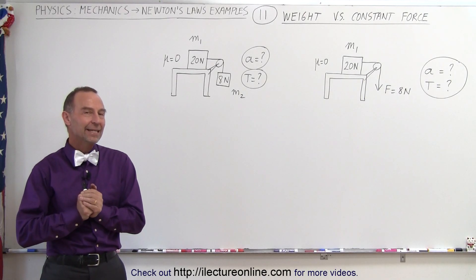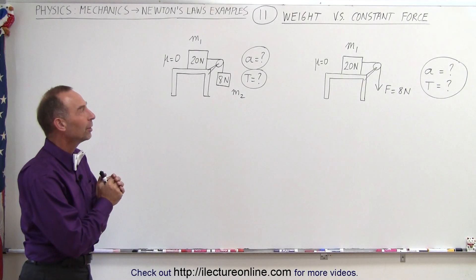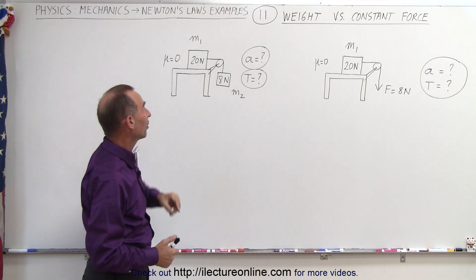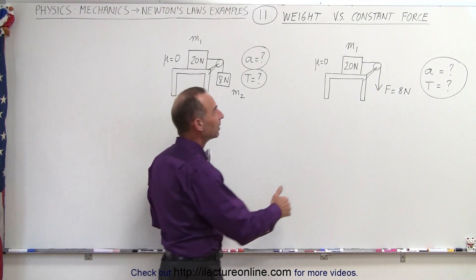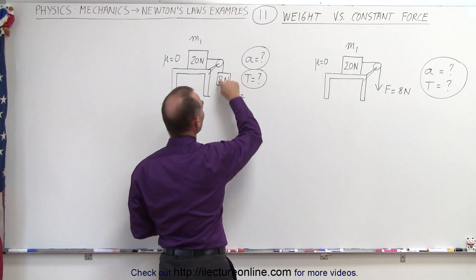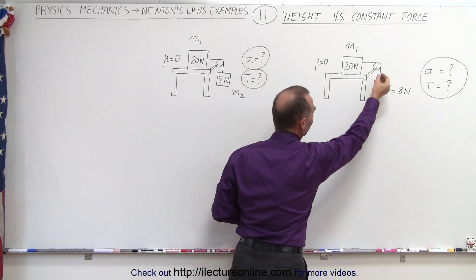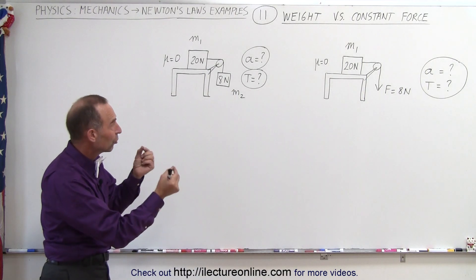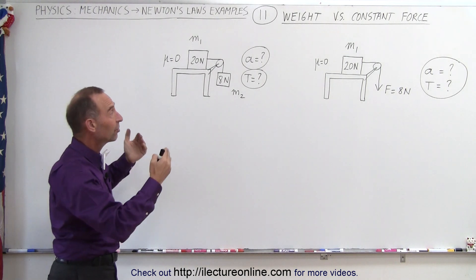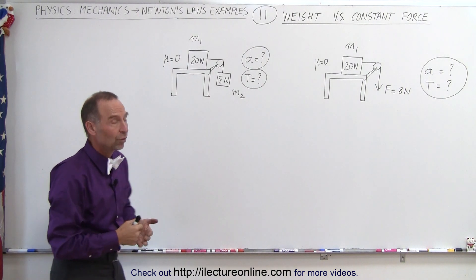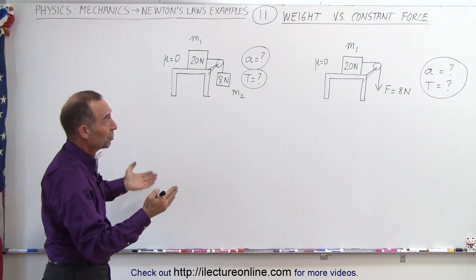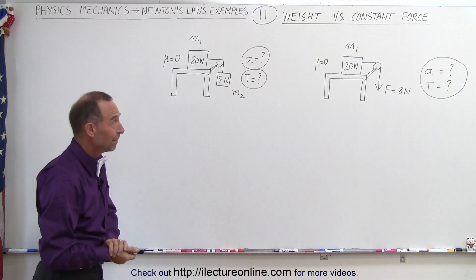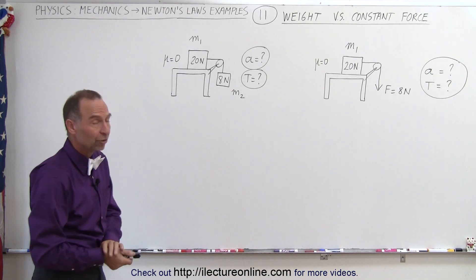Welcome to ElectronLine. Here's a good example that shows the difference between having a mass pull another mass across the surface of a table versus a constant force. The weight of the small mass is 8 newtons and the constant force pulling a big mass of 20 newtons across the table is also 8 newtons. The question is: will the accelerations be the same, and will the tension in the string be the same? From first observation you would think yes, but when we work them out you'll find they're actually different.